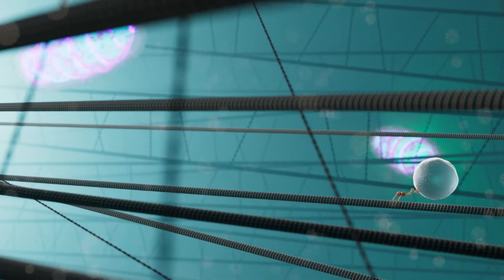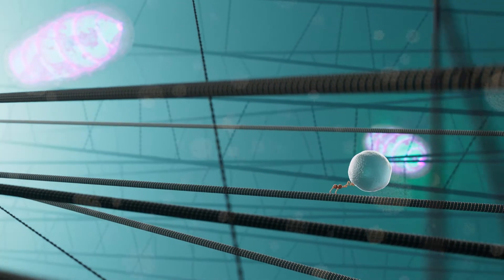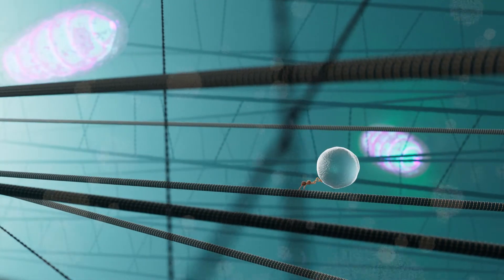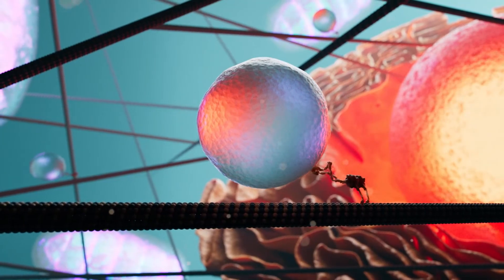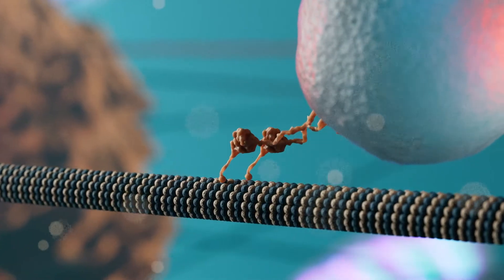On top of this, they fulfill several important functions. Apart from stabilizing the cell, they also form a kind of rail network for transporting substances, which are carried to their destinations by motor proteins.